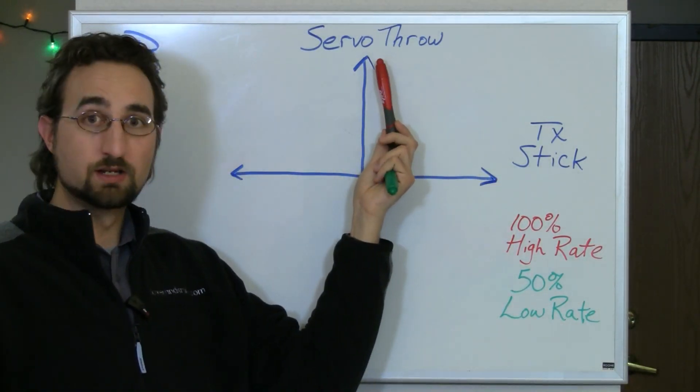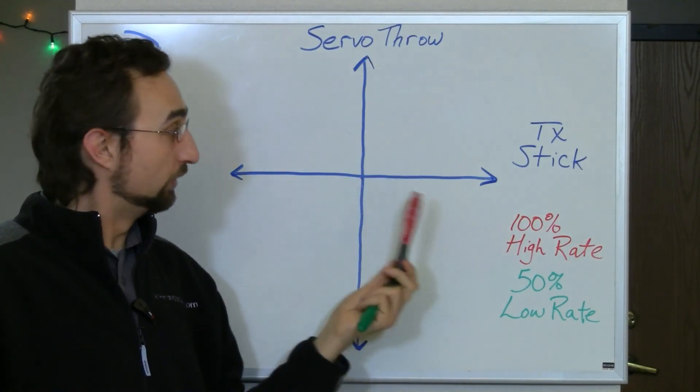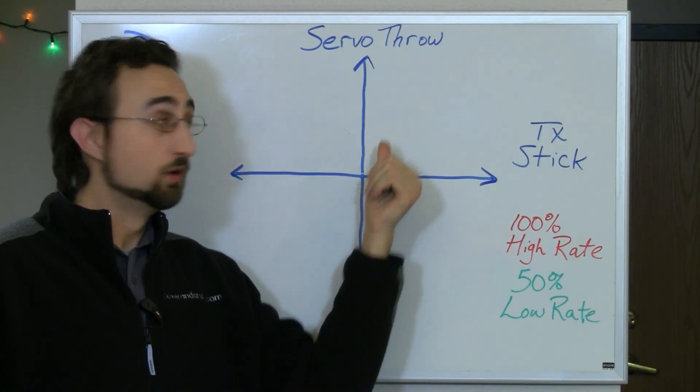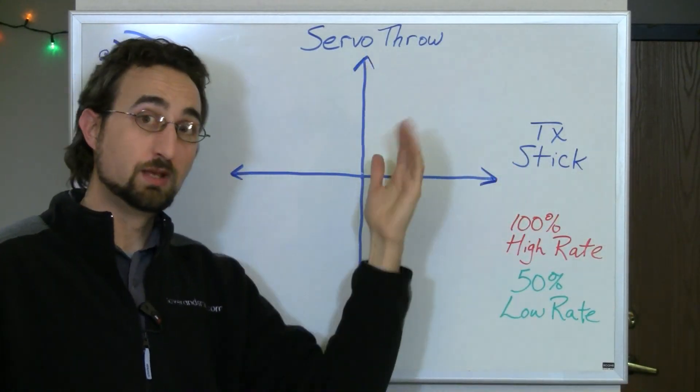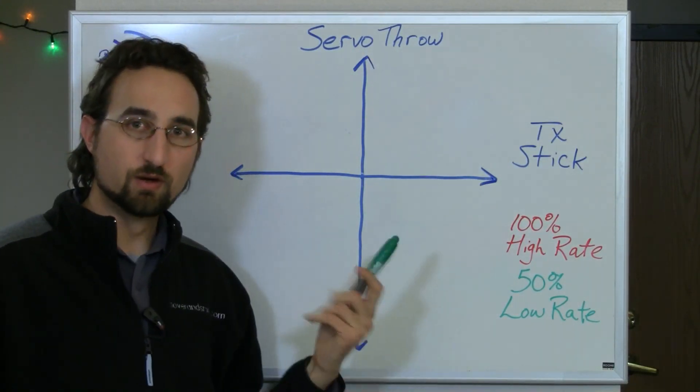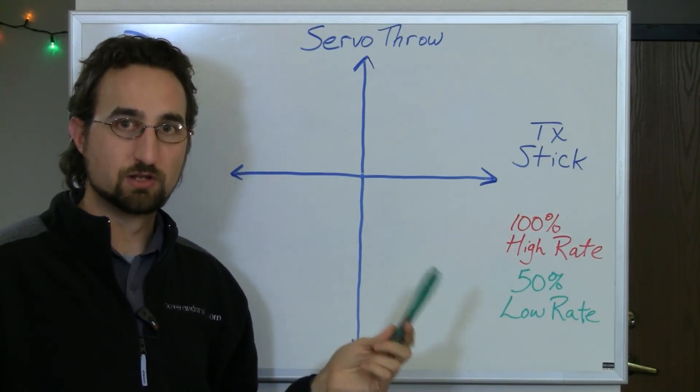On the opposite line here, we've got servo throw. So when my servo arm is centered, it's here. When it's extended all the way to one position, it's there. And when it's extended to that opposite position, it's here. This graph is very useful for explaining dual rates and exponential.